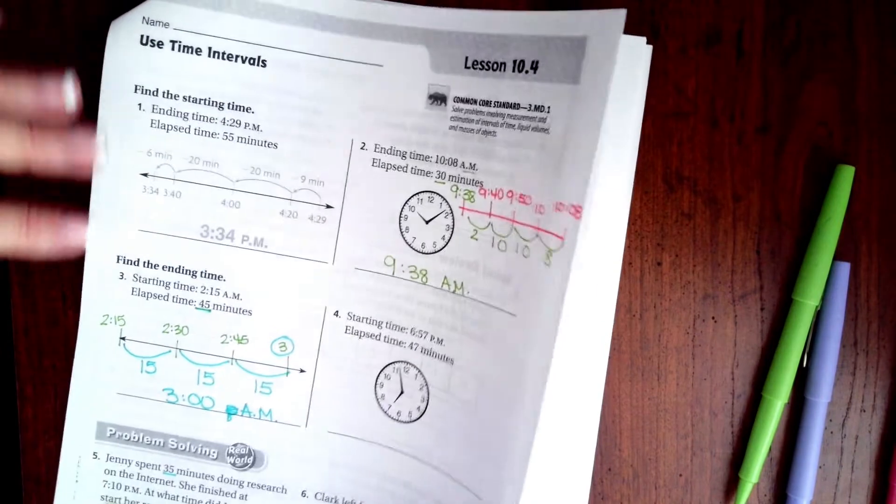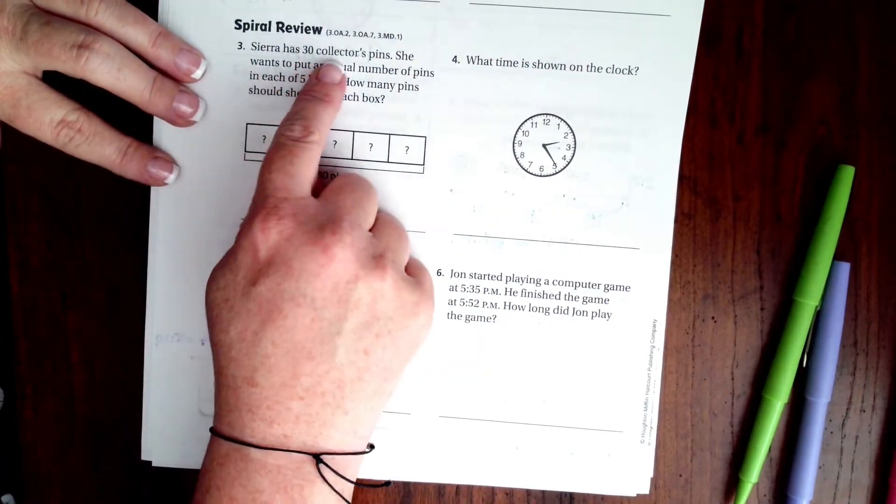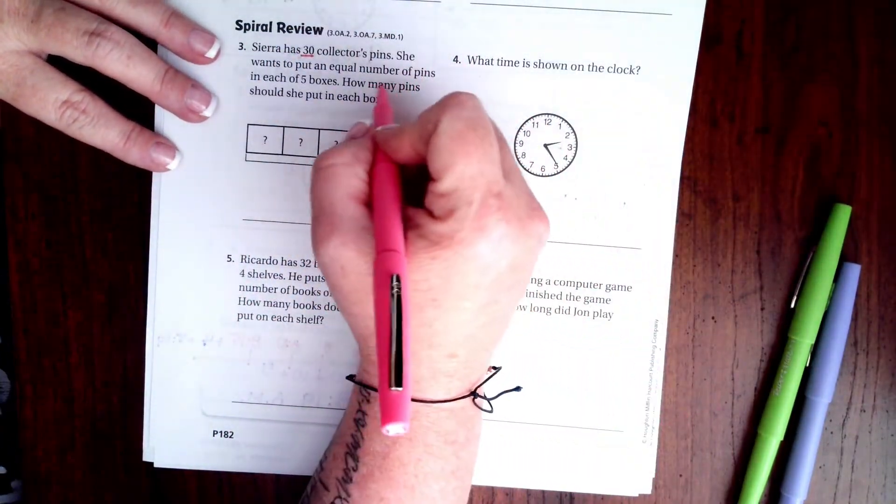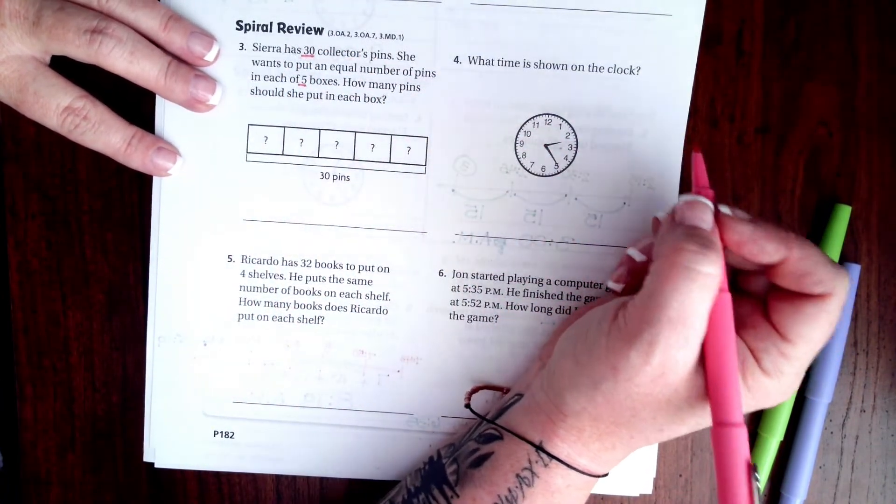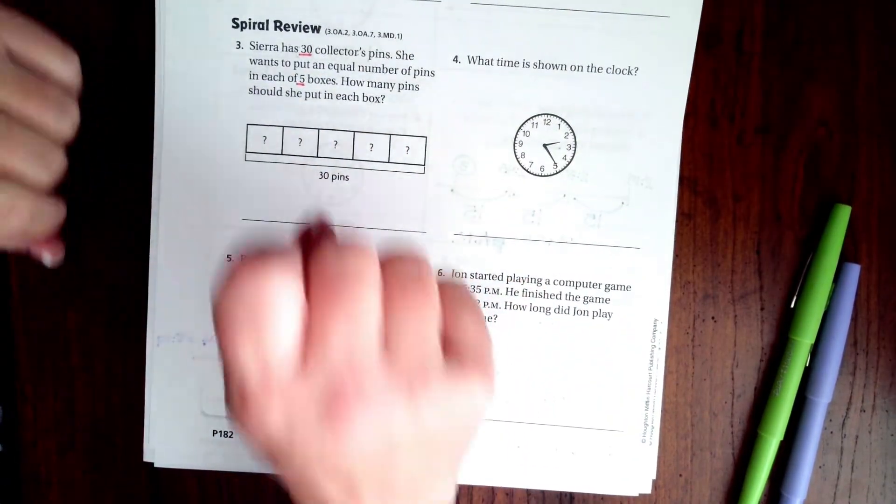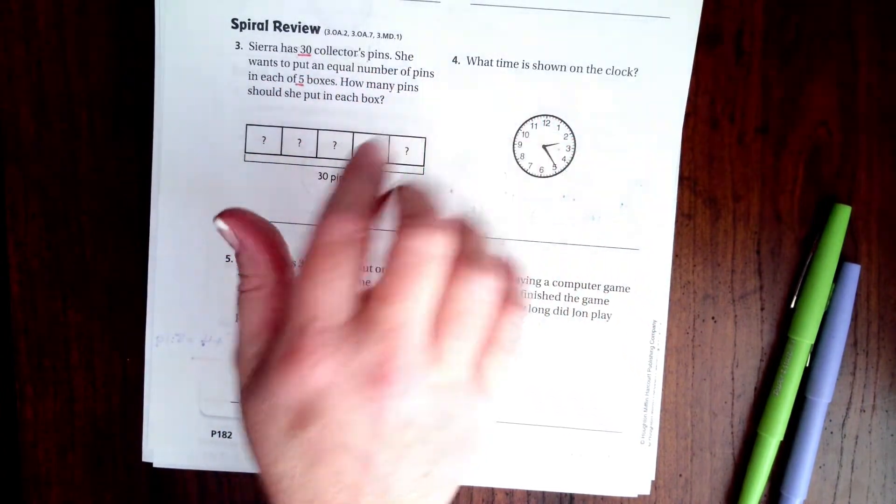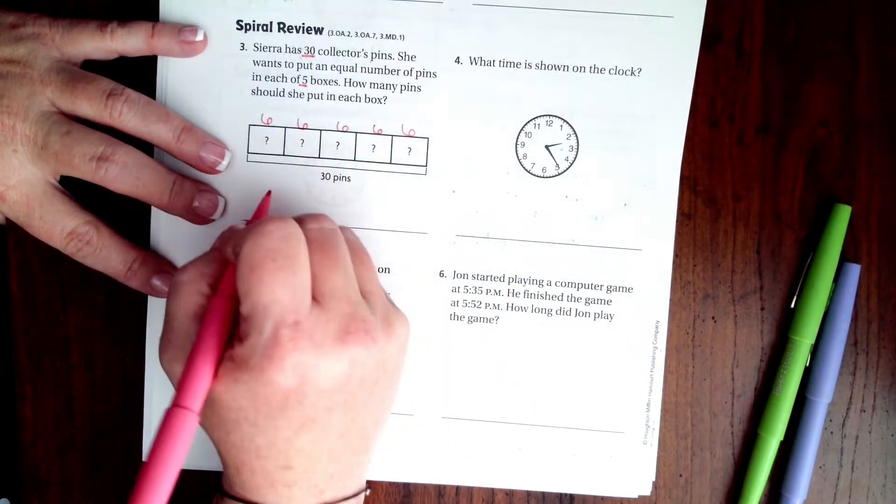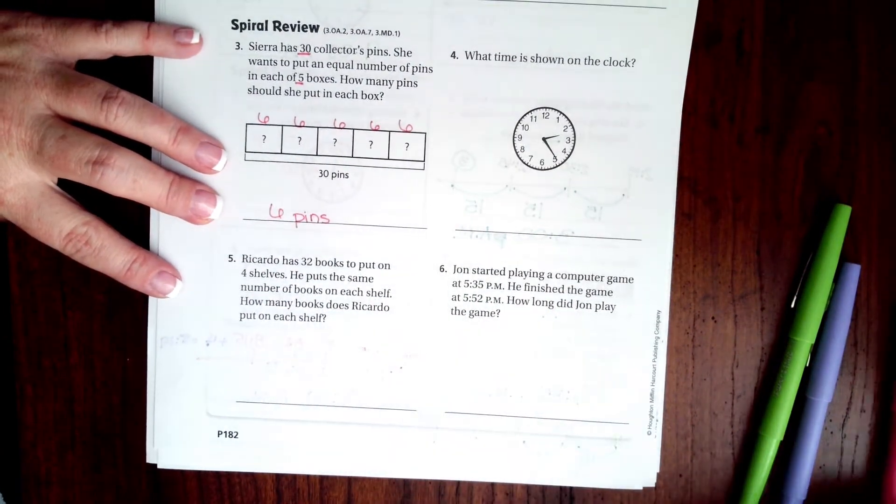Alright, guys. Let's go on to the back where you guys are going to do the lesson check just like always. And we're going to go down and do this spiral review. It says Sierra has 30 collector's pens. She wants to put an equal number of pens into each of 5 boxes. How many pens does she put in each box? Well, I'm going to count by 5 until I get to 30. So, I'm going to have 5, 10, 15, 20, 25, 30. Well, that's 6. So, now that means that each one of these boxes would have 6 in it. So, she should put 6 pens in each box.